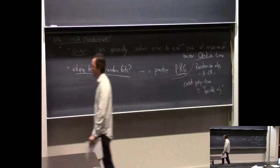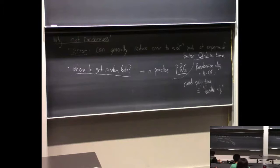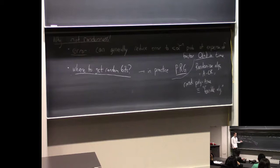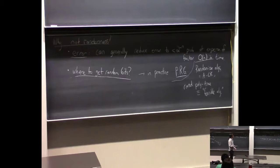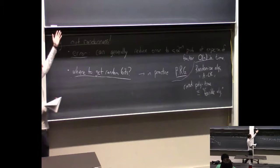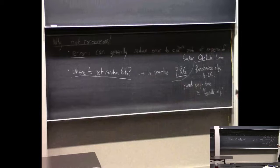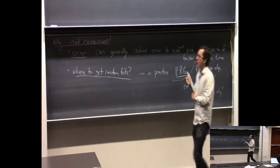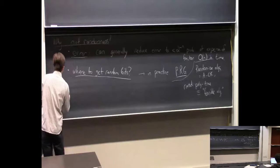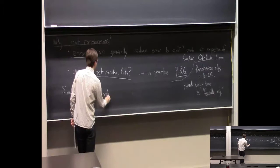The issue of de-randomization is theoretically very interesting. You should think about it more as: do we really need randomness? — as opposed to being desperate to avoid randomness for some practical reason. Another reason to really like randomness is that there are some problems — not tons of problems, but some interesting ones — where the fastest or best way we know to solve them uses randomness, and we currently don't know how to get an equally good deterministic algorithm. So I want to talk about some fast randomized algorithms.